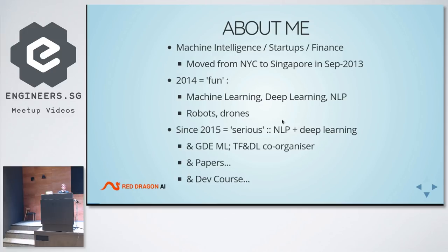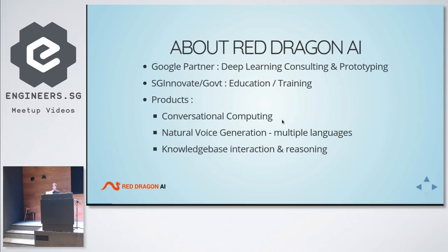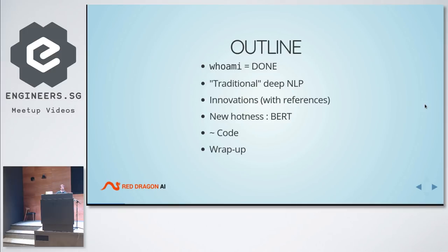About me: I have a background in machine learning, startups, and finance. I came here in 2013-2014, just having fun reading papers and doing robots and drones. Since 2015 I've been serious about natural language processing. I'm a Google Developer Expert for machine learning. We organize this meetup with Sam, and this year we've got four papers published. We also have a small company called Red Dragon.